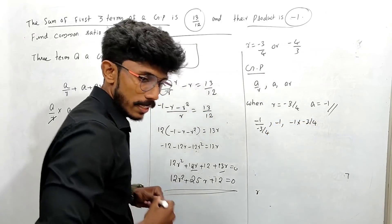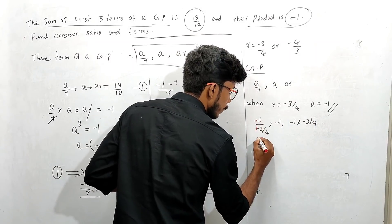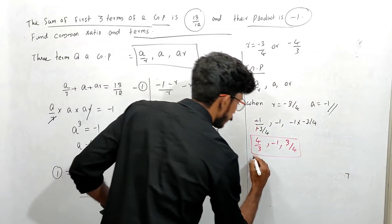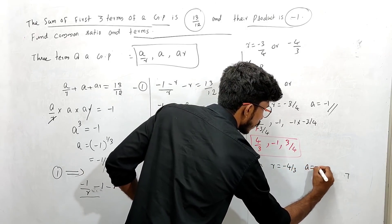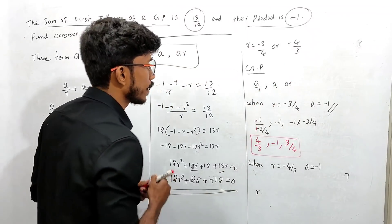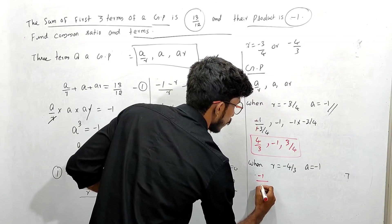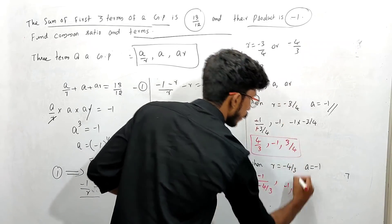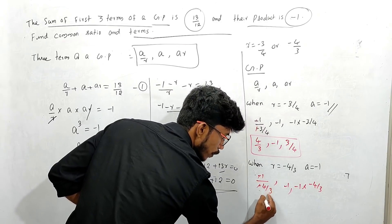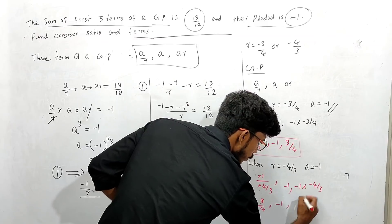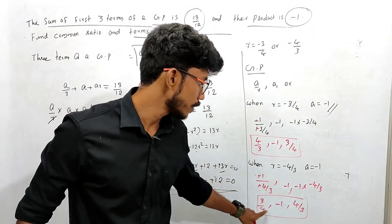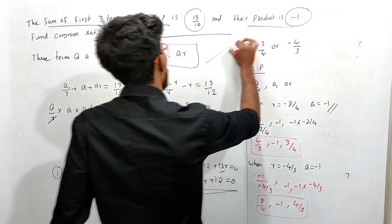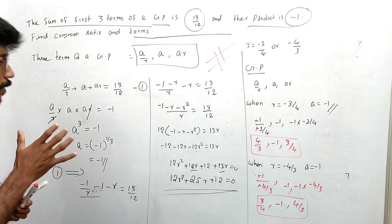So A/R with A equals minus 1 and R equals minus 3 by 4 gives minus 1 divided by minus 3 by 4, which equals 4 by 3. The GP terms are 4/3, minus 1, and 3 by 4. When R equals minus 4 by 3, A equals minus 1 — because the value of A is the same. These are the two GP solutions.